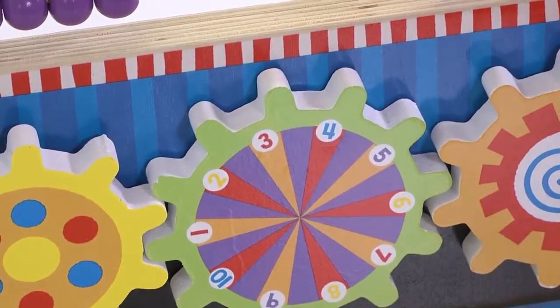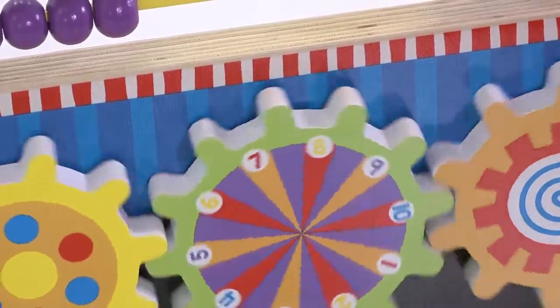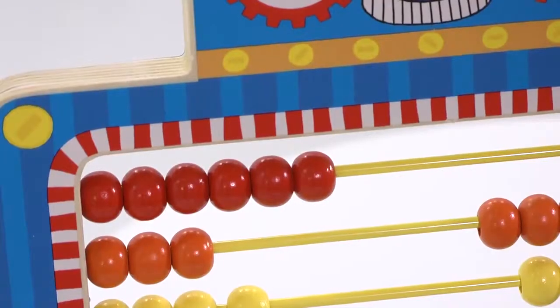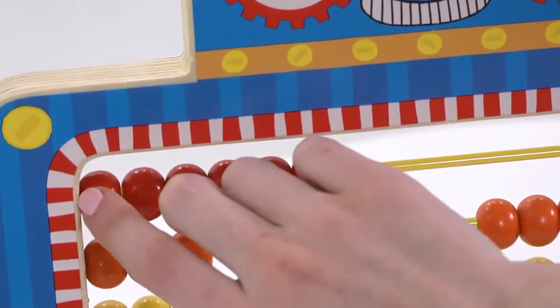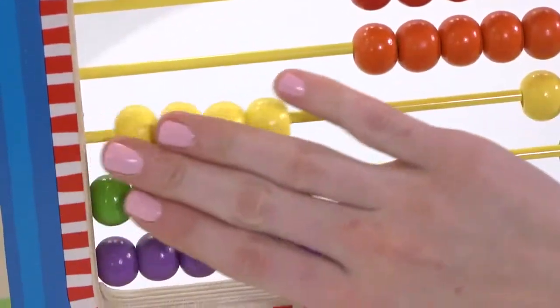Get your youngster on the road to better math skills with this engaging toy. For ages 18 months or older, the Count and Spin Abacus is a part of the Alex Jr. collection of toys created specifically for baby's first years of discovery.